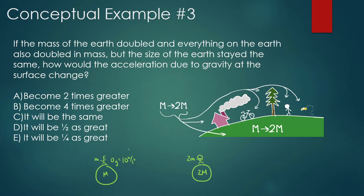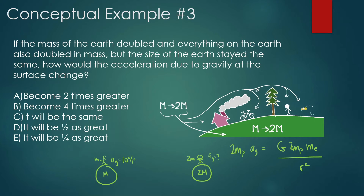Looking at the equation — force of gravity equals G times mass of person times mass of Earth divided by R² — and since we're looking for the acceleration due to gravity, we write mass of person times acceleration of gravity on the left side. The mass of the person cancels out, so it doesn't matter that it doubles. The mass of the Earth doubles, changing that factor by 2. The size stays the same, so R² doesn't change. So the acceleration of gravity increases by a factor of 2 — it becomes 20 m/s².